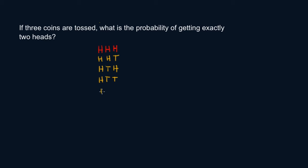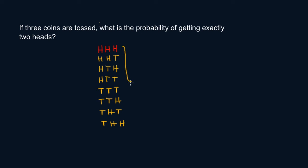You can also have tail, tail, tail — all three showing tails. Or tail, tail, and head. Or tail, head, and tail. Or tail and two heads. These are all your possible outcomes when you toss three coins at the same time, and this equals eight outcomes total.